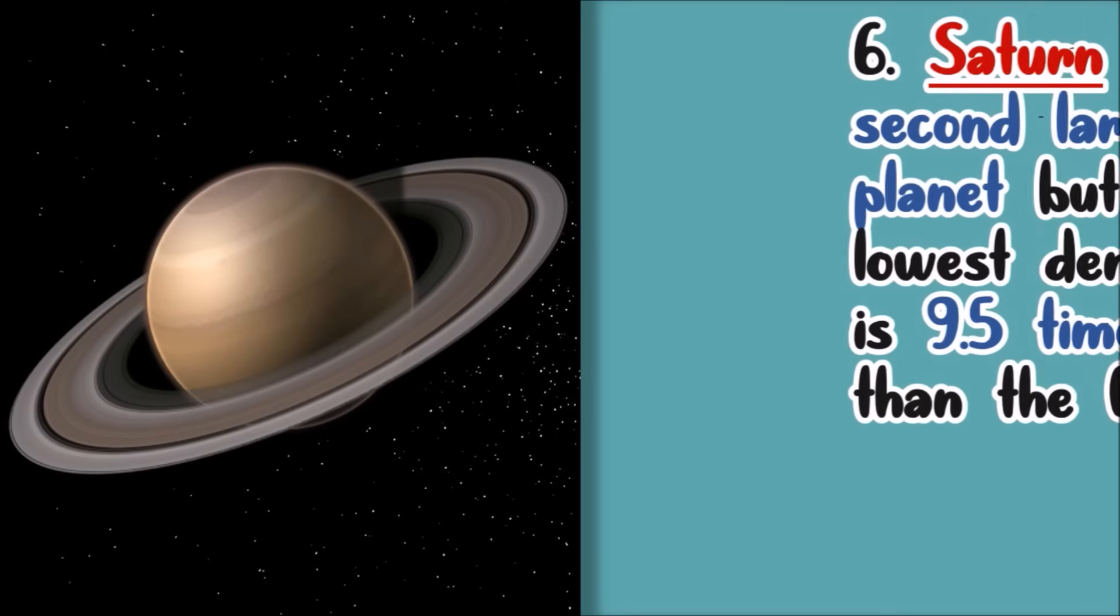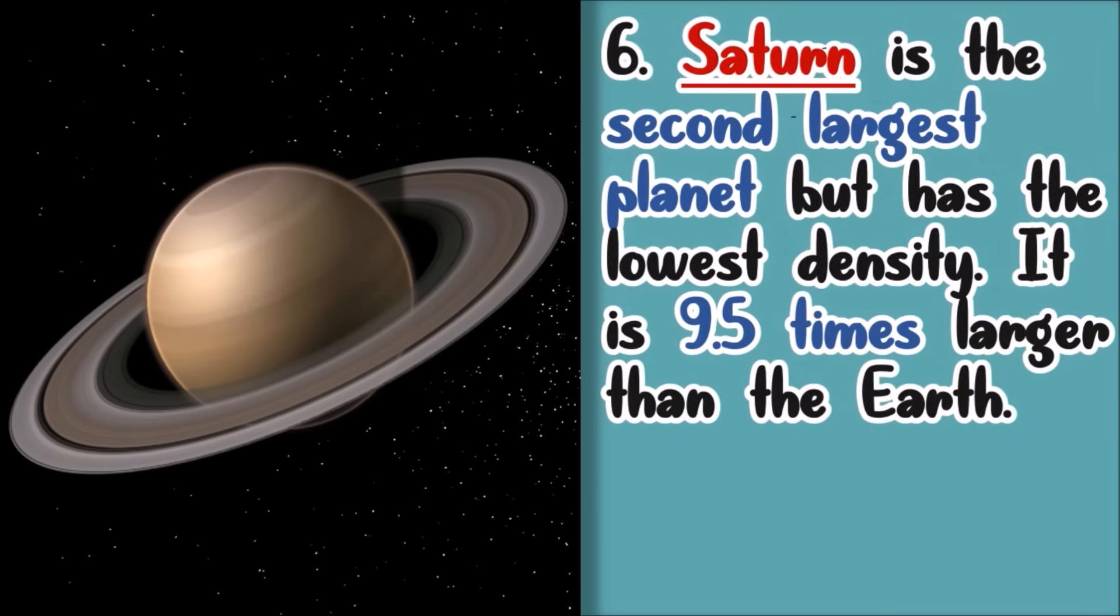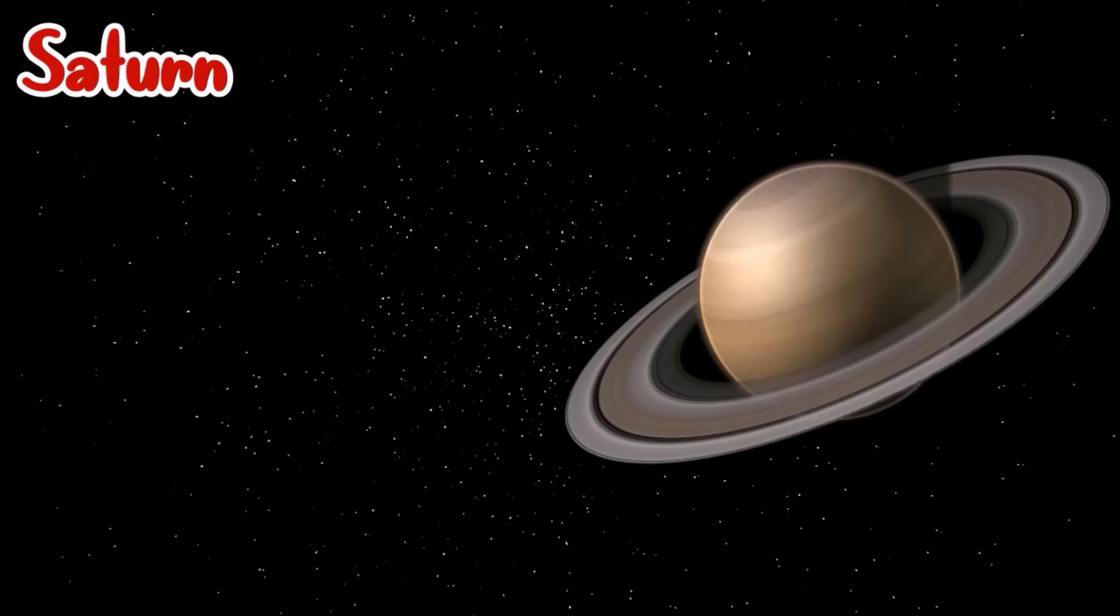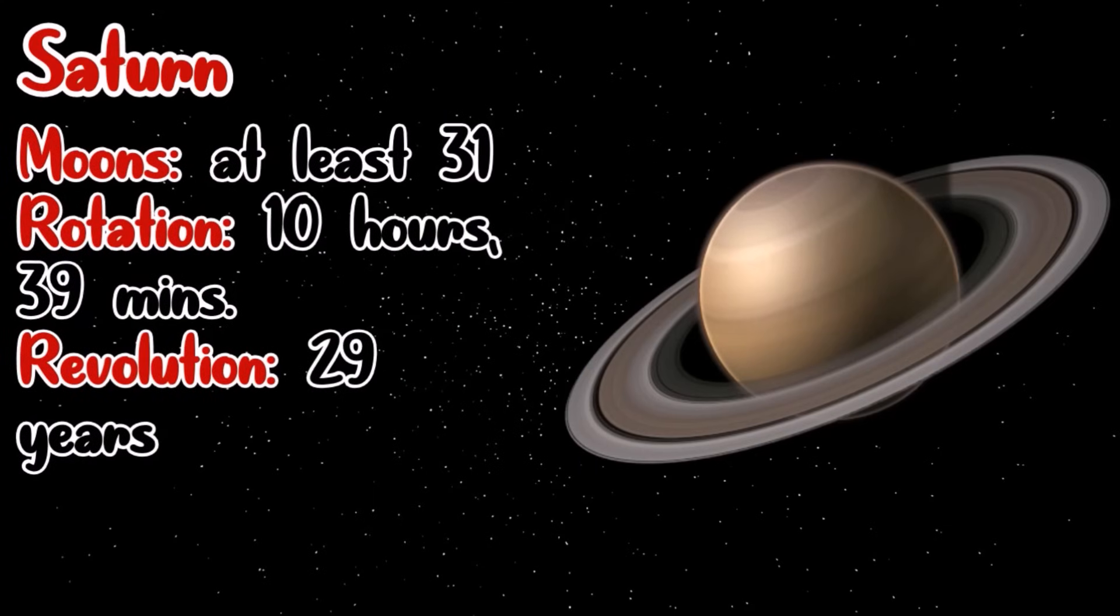Saturn. Saturn is the second largest planet but has the lowest density. It is 9.5 times larger than the Earth. Its rotation requires 10 hours and 39 minutes. It requires 29 years to complete a revolution around the Sun.